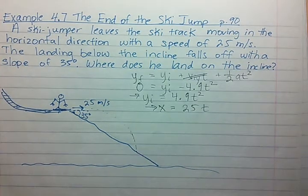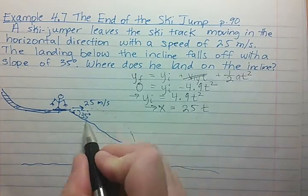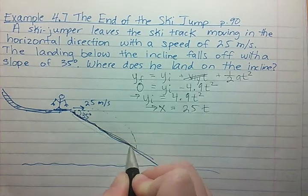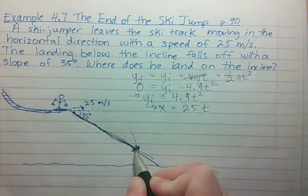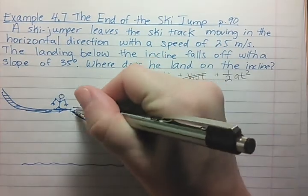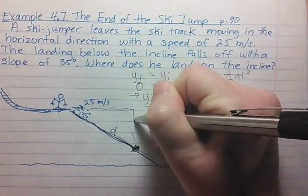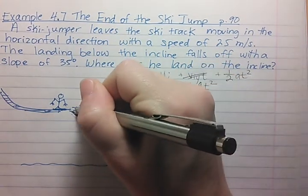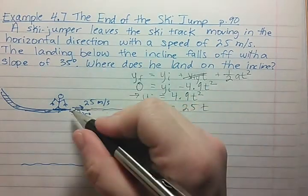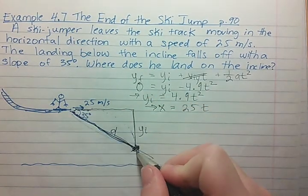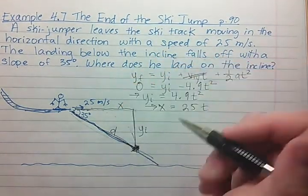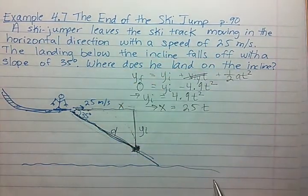We do know other things in this problem. Let's just say he lands here at this point. I'm gonna call this distance d and then we can relate d to both our x and y components. So this is going to be our y component, it's actually going to be yi. If he lands here on the slope then that's how far he falls down and x will be how far he goes over in the x direction.